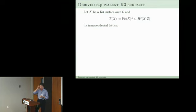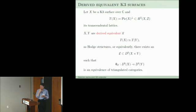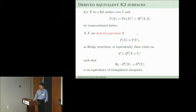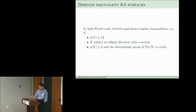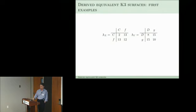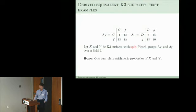In the last few minutes: some more arithmetic work on derived equivalent K3 surfaces. Two K3s are derived equivalent if you have an isomorphism of transcendental lattices, but this doesn't immediately tell you how to work over a non-closed field. Over a non-closed field you want an equivalence of triangulated categories defined over your field. In high Picard rank, derived equivalent K3s are isomorphic; in low Picard rank — in particular rank 1 — you can have non-isomorphic but derived equivalent K3s.